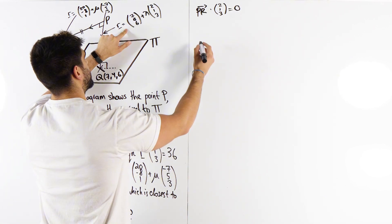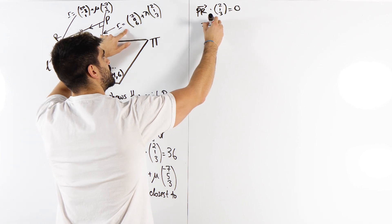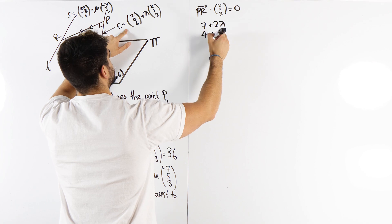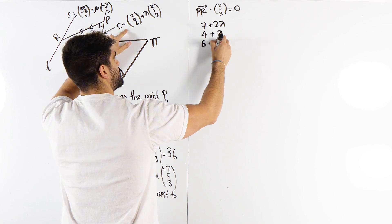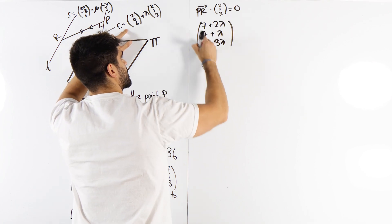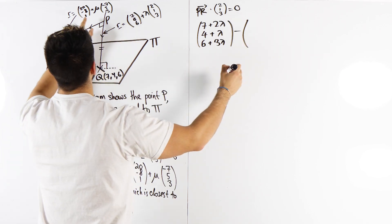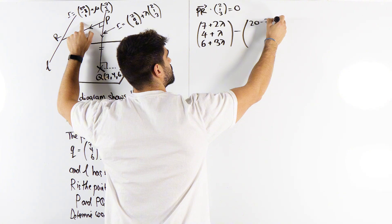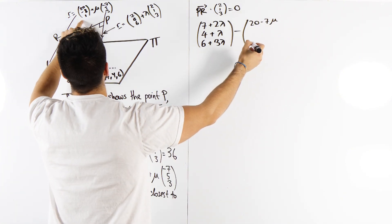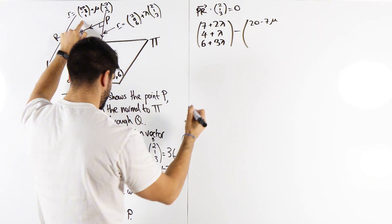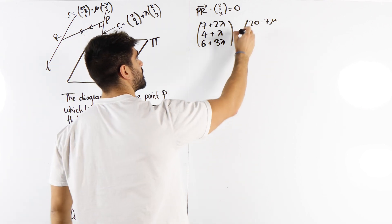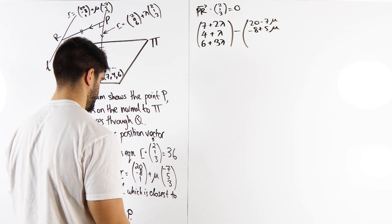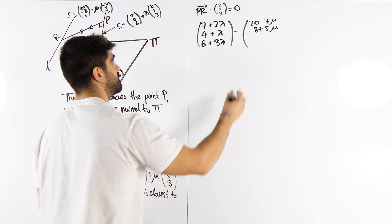So there's a general point for P, which is 7 plus 2 lambda, 4 plus lambda, 6 plus 3 lambda, and we are subtracting 20 minus 7 mu, minus 8 plus 5 mu, and 1 plus 3 mu.